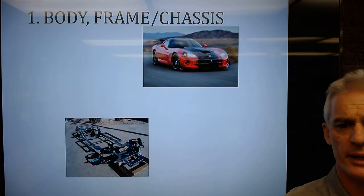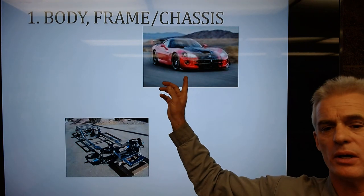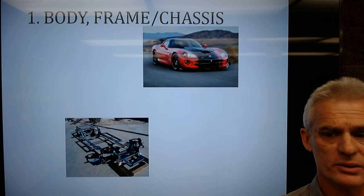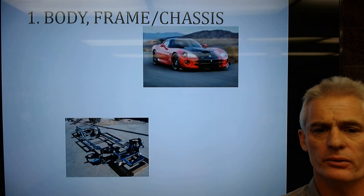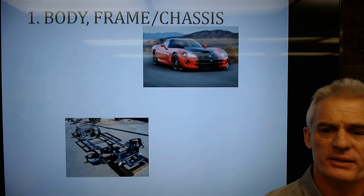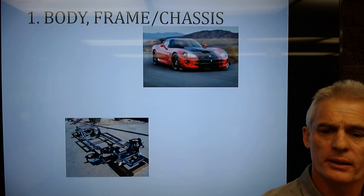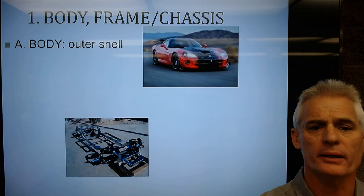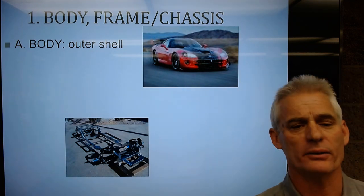First, the body, frame, and chassis. The body is the pretty part of the car, as seen here on this Dodge Viper Coupe. It's usually light gauge steel, though some cars have fiberglass panels and some have aluminum panels like the new Ford F-150, where the doors and cab are all aluminum and the bed is still steel — they dropped 500 pounds by switching to aluminum. Some cars have carbon fiber parts, which are very expensive but very strong and light.